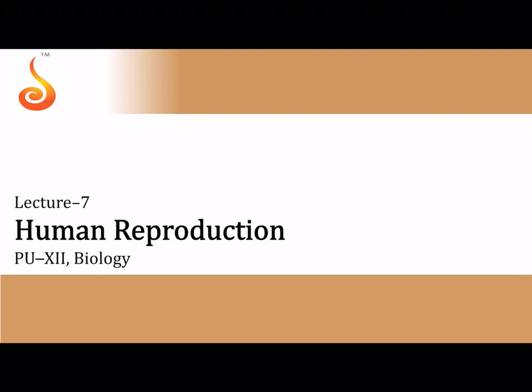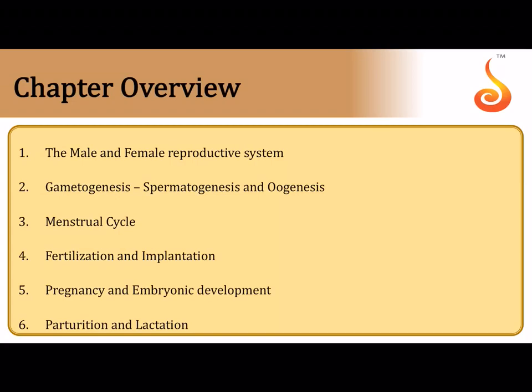Hello everybody, welcome to Teeksha Online. We are going to continue with this chapter on human reproduction. Before I discuss this lecture, we will go through the chapter overview. Till now we have learned about the male and female reproductive system, the structural and functional aspects, gametogenesis, the menstrual cycle, fertilization and implantation. Now we will be learning about pregnancy, embryonic development, childbirth or parturition, and lactation.